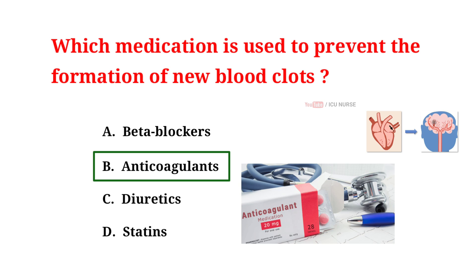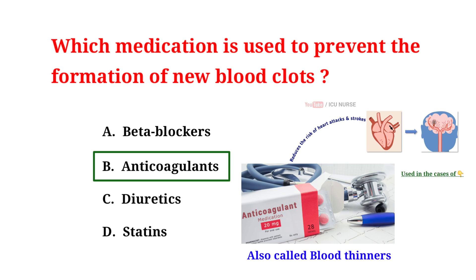Anticoagulants prevent the formation of new blood clots by thinning the blood. This helps to maintain smooth blood flow through the heart and blood vessels. By stopping clots from forming, anticoagulants reduce the risk of blockages that can lead to heart attacks or strokes. This is particularly important for people with conditions like atrial fibrillation, deep vein thrombosis, or after certain surgeries.